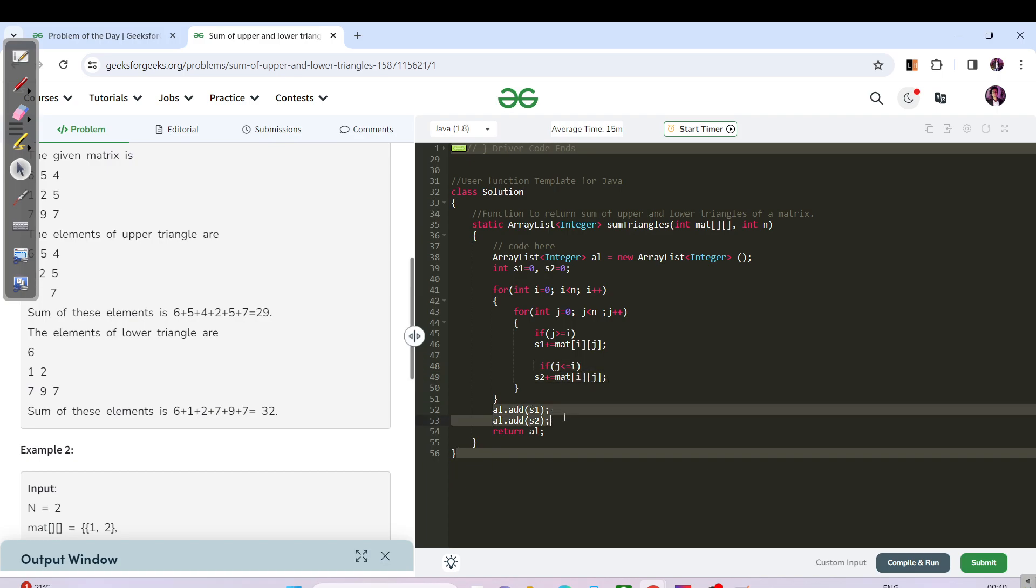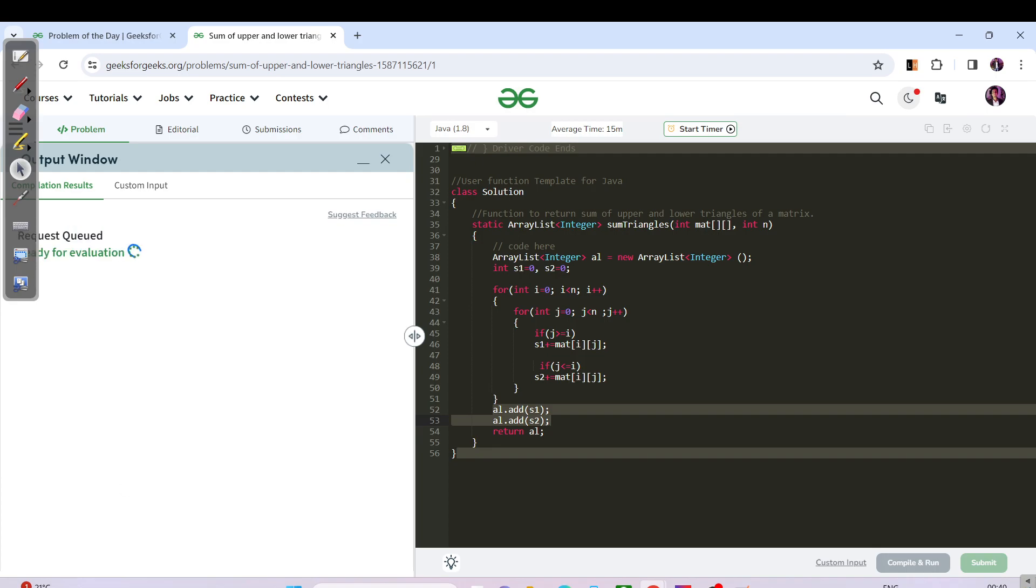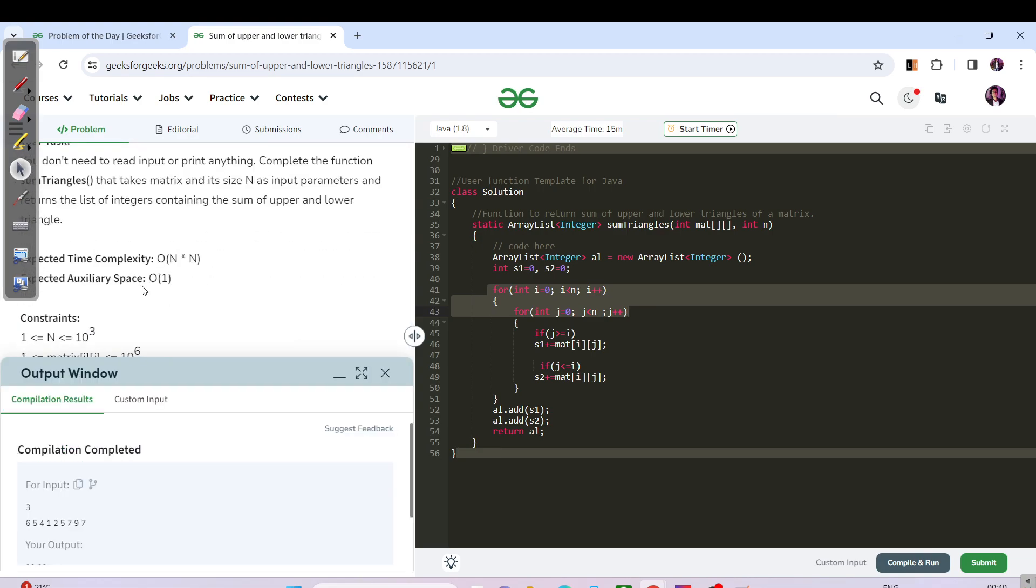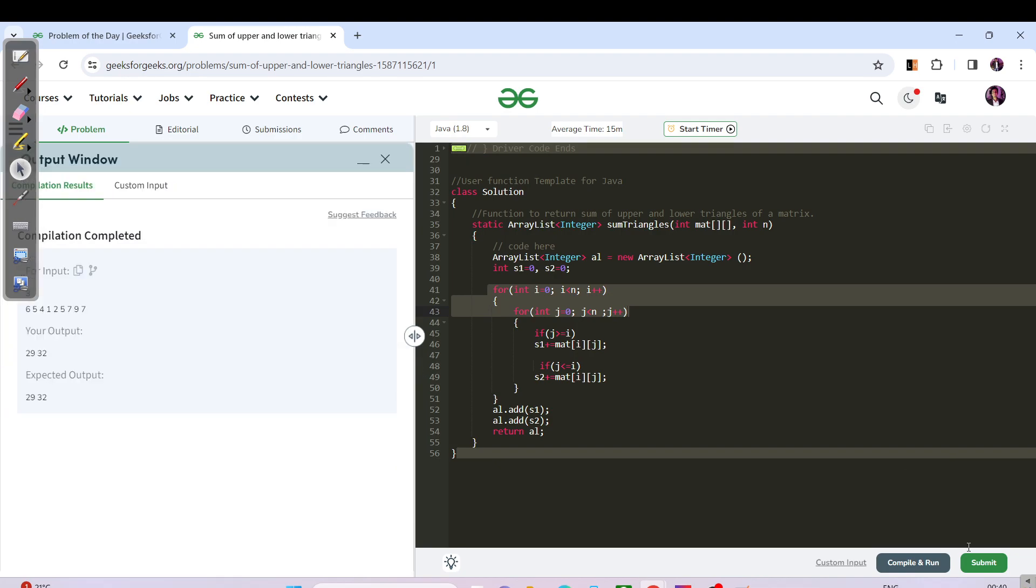At last we need to push both the sums in our array list. Let's compile and run. Let us hit the submit button. Meanwhile it is compiling, what is the time complexity? We are running a nested for loop till n, so it would be n squared. Based on the constraint, n is 10 power 3, and we are using n squared, so 10 power 3 squared is 10 power 6, which is definitely less than 10 power 8. That is why this code will definitely get submitted.